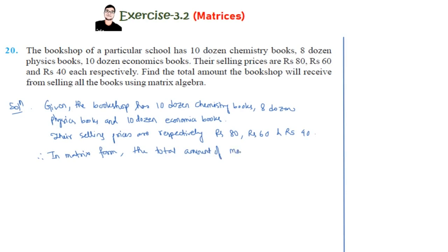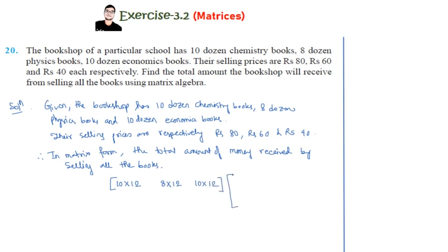The total amount of money received by selling all the books: chemistry books are 10 × 12, physics books are 8 × 12, and economics books are 10 × 12. The chemistry books cost rupees 80, physics rupees 60, and economics rupees 40 respectively. This is the total cost. We can do multiplication only if the matrix dimensions are compatible — an m×n matrix multiplied by an a×b matrix requires n = a.